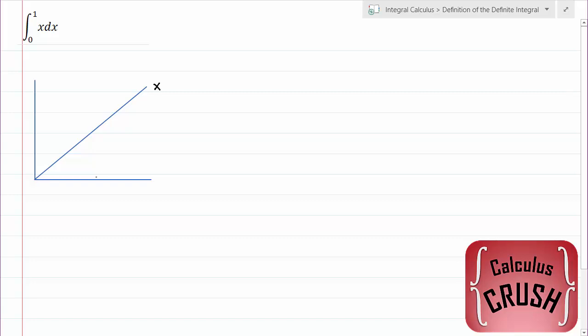Now the area from 0 to 1, we don't even need to use integration to do this. I mean, we all know what the area of a triangle is. Area is equal to 1 half base times height. So we can figure that out, but we're not going to do that.